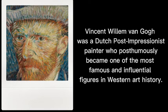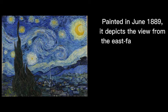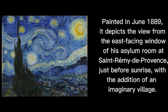One of his famous works is The Starry Night. The Starry Night is an oil-on-canvas painting by the Dutch post-impressionist painter Vincent Van Gogh. Painted in June 1889, it depicts the view from the east-facing window of his asylum room at St. Rémy-de-Provence, just before sunrise, with the addition of an imaginary village.